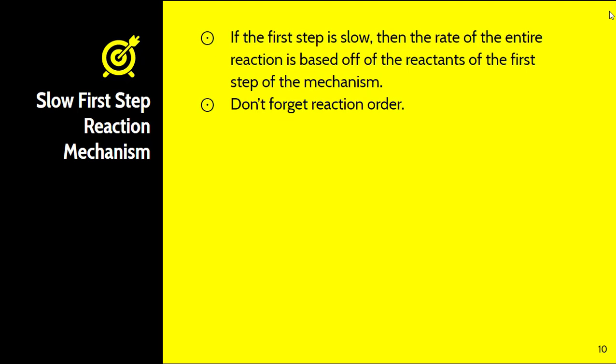There are two different ways to determine the reaction rate of a reaction mechanism. We must first determine which step is the slow step, then follow certain rules. If the first step is slow, the rate of the entire reaction is based on the reactants of that first step. Take those reactants and turn them into your rate law, using stoichiometric coefficients to determine reaction order.